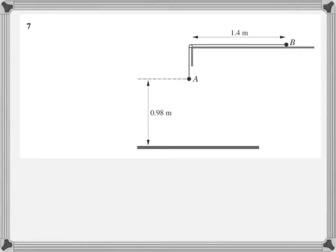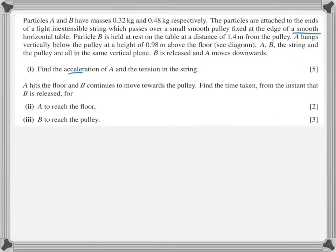The last question involves a connected particle diagram. One particle is on a smooth table, the other hangs freely. Particle A is 0.98 meters above the ground. A hits the ground and does not rebound, the string becomes slack, and particle B continues as a free particle approaching the pulley. The question asks: with what speed does A hit the ground, and find the time taken from release for A to reach the floor and B to reach the pulley.